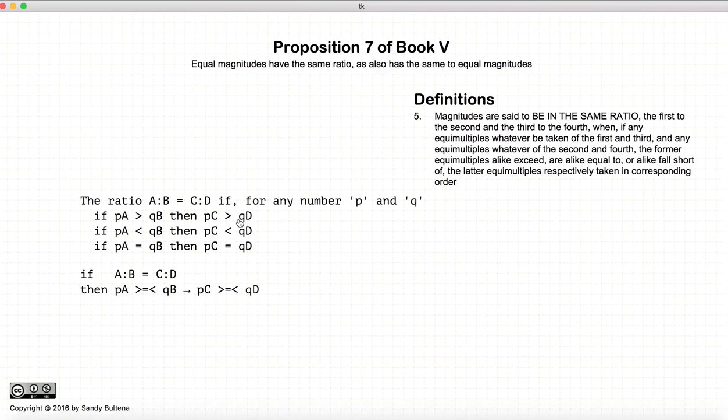Or again with some arbitrary choices of p and q where pA is less than qB also implies that pC is less than qD. And again for equals equals. If this is true, then that is the definition that a to b or the ratio of a to b is equal to the ratio of c to d.